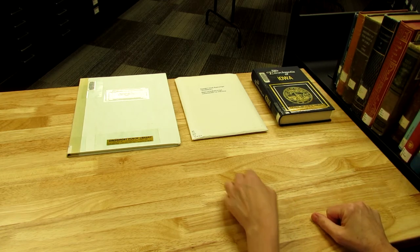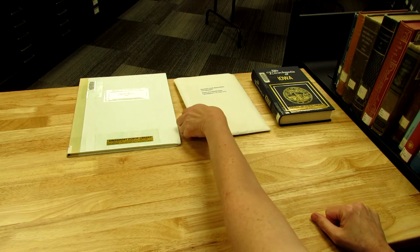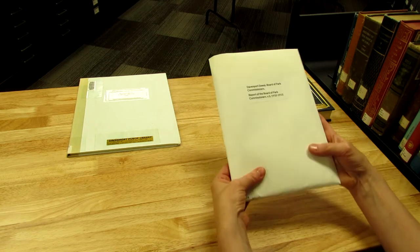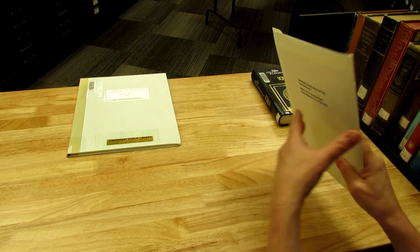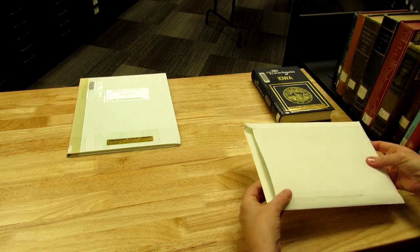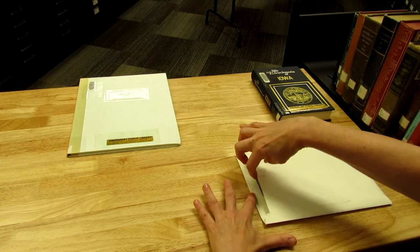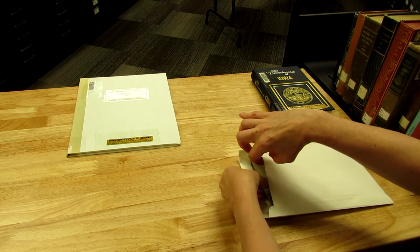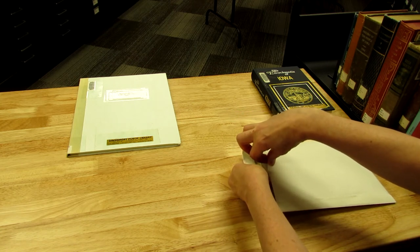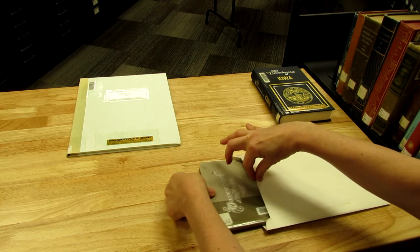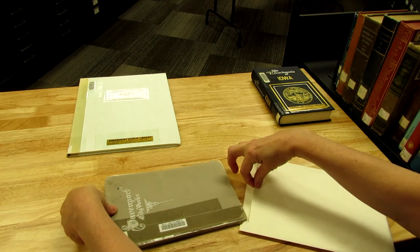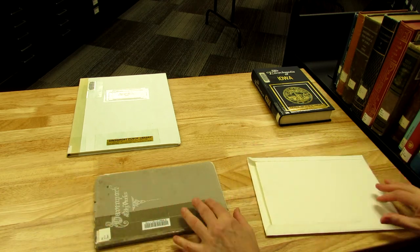Some of the items on the open stacks will be in envelopes like this one. Take care that the item does not snag on the folds of the envelope as you pull it out slowly flat on the surface of the table.